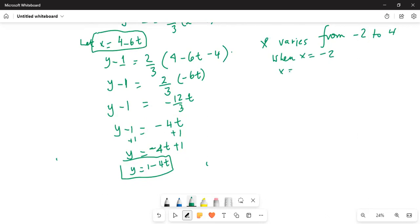So when x is -2, we have x equal to 4 minus 6t, so -2 is equal to 4 minus 6t, or we subtract 4 on both sides.